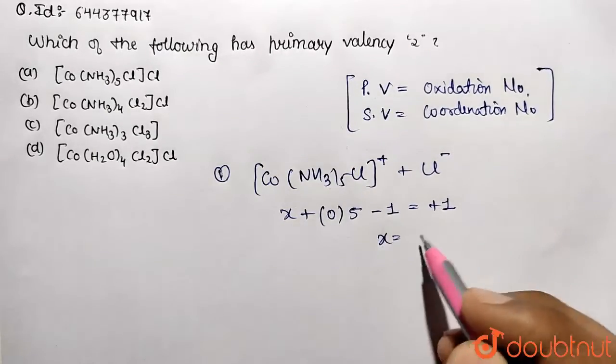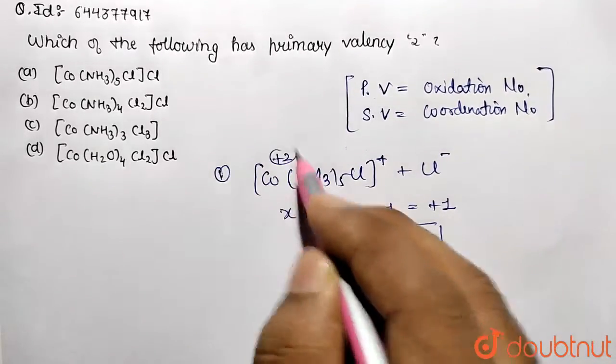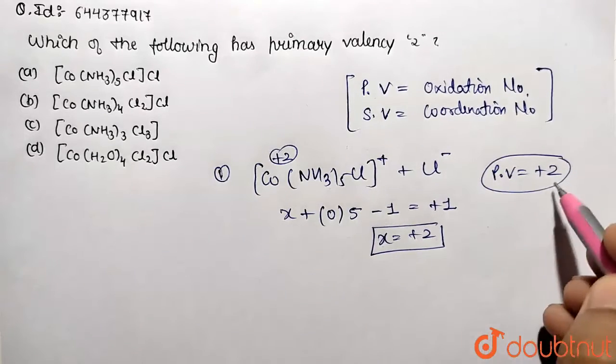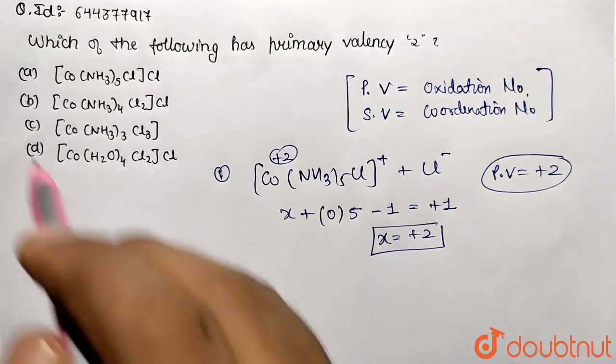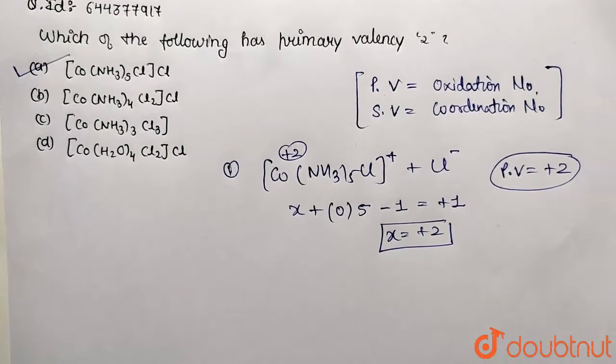And this is equivalent to positive charge on the coordination sphere. So value turns out to be, this will go that side, so positive 2. That means this cobalt is present in second ionization state. So what is primary valency? It is going to be plus 2. And we need to search for the primary valency of plus 2. So it is going to be option A, which is the correct answer.